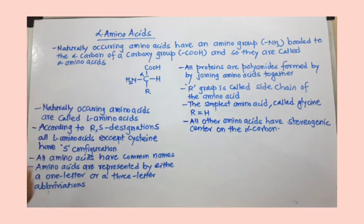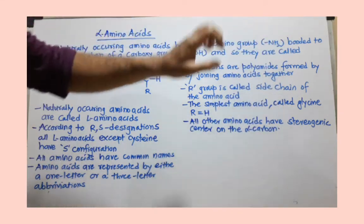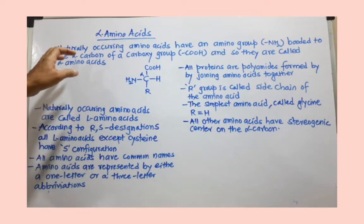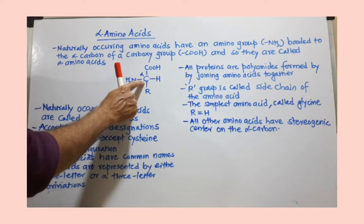Naturally occurring amino acids have an amino group bonded to the alpha carbon of the carboxyl group. The carboxyl group is here. The next carbon is the alpha carbon where the amino group is attached.